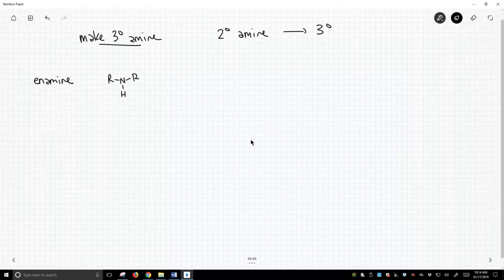To make an enamine, we need to start with a secondary amine and treat it with a carbonyl compound. We'll perform this in an alcohol solvent like methanol, and we get our enamine.